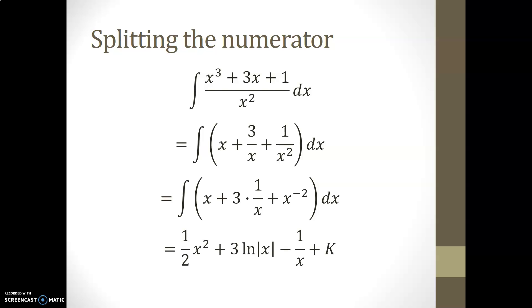So 1 half x squared, 3 times the ln of x, where the x is in absolute values for domain purposes, and x to the minus 1 over minus 1, or if you prefer minus 1 over x, is the antiderivative of x to the minus 2. An arbitrary constant is, like usual, added to the end result.